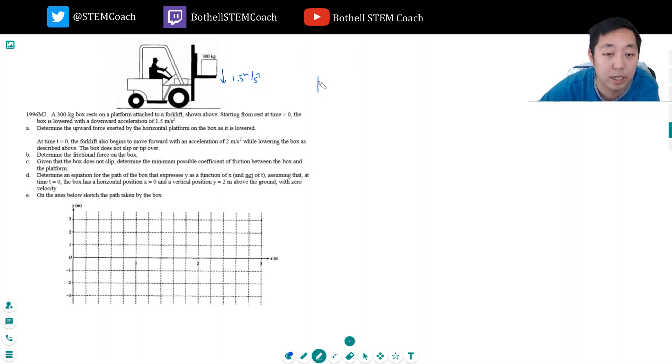Let's do the free body diagram on this block. I have gravity pulling down on it, Mg, and then the platform is pushing up on it, right? Otherwise the box would just fall, so it's the normal force. Anything else acting on the block? Nope. Where does this come in? This is the net acceleration, so I do net force equals ma.